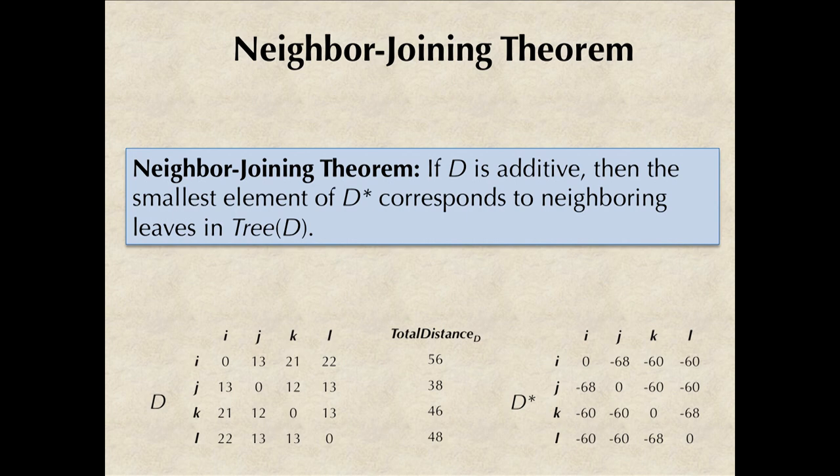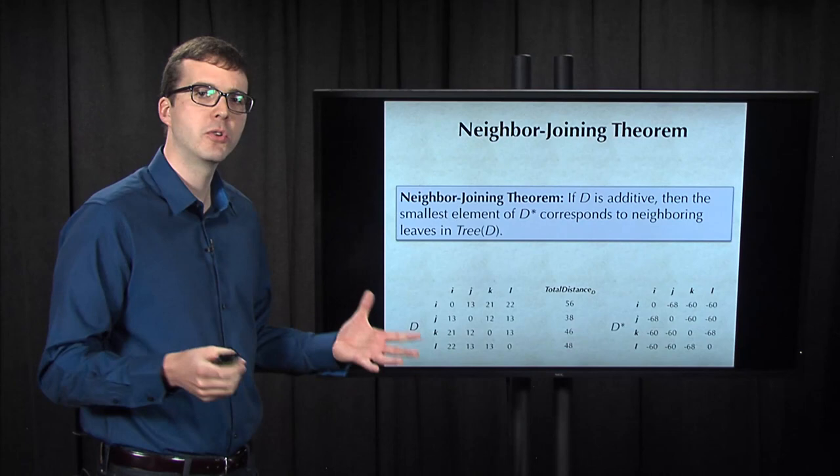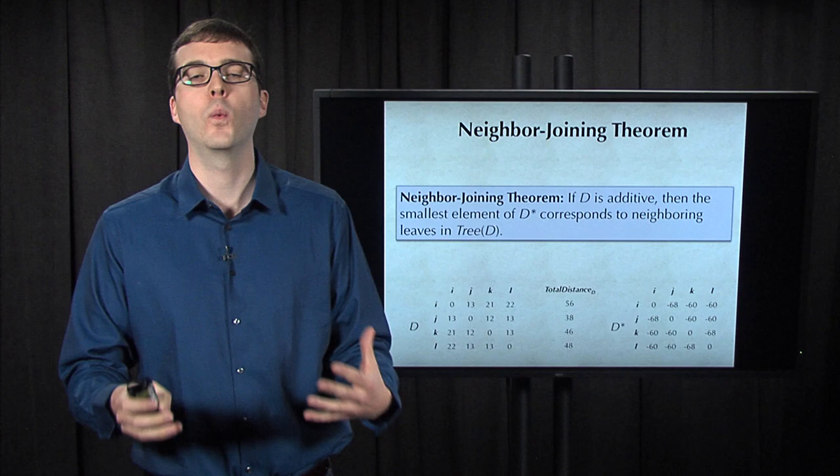It's not a short proof. In fact, although D* was introduced in 1987, it took a decade before a proof of this theorem was found. Also, the neighbor-joining theorem is part of the reason why I led you down the wrong path in the first place when we first attempted to construct a phylogeny from a distance matrix.